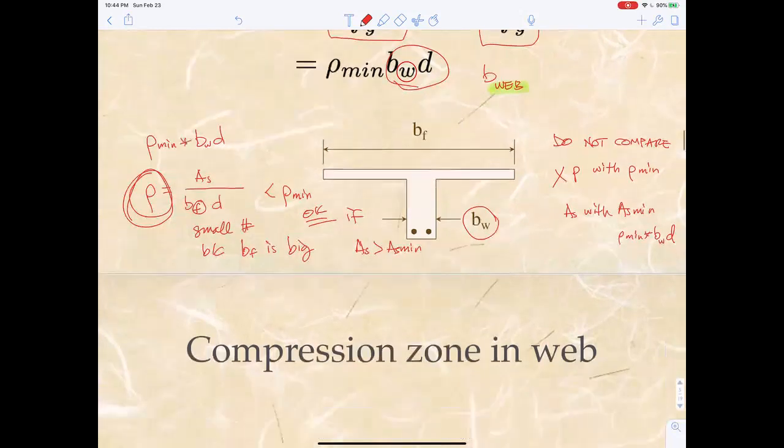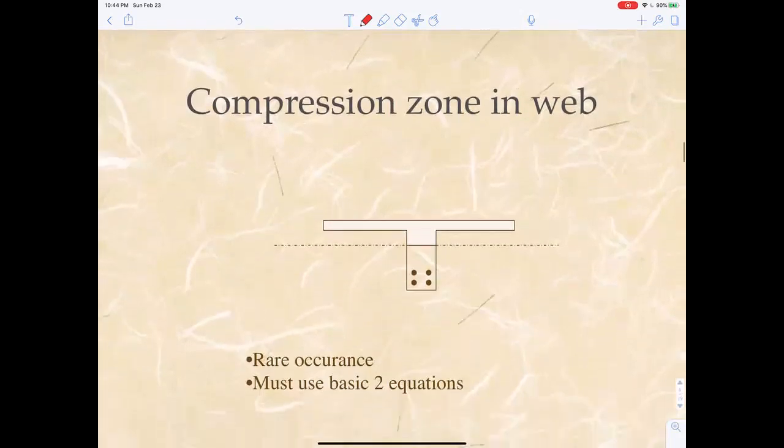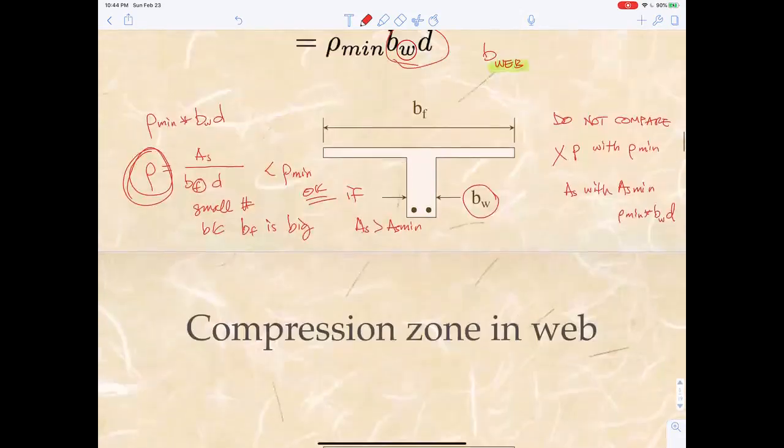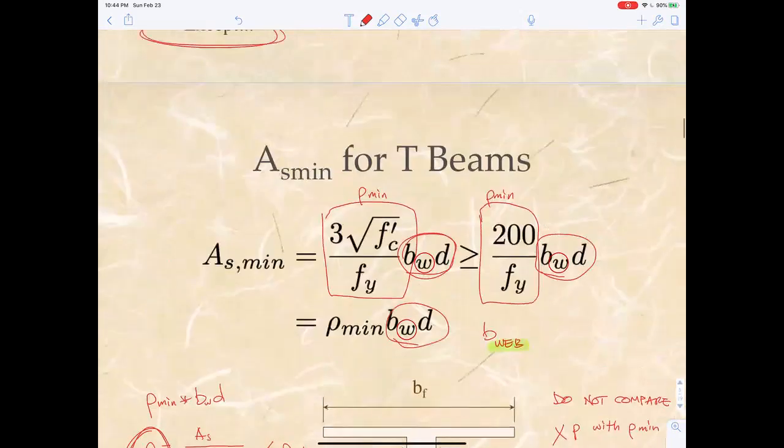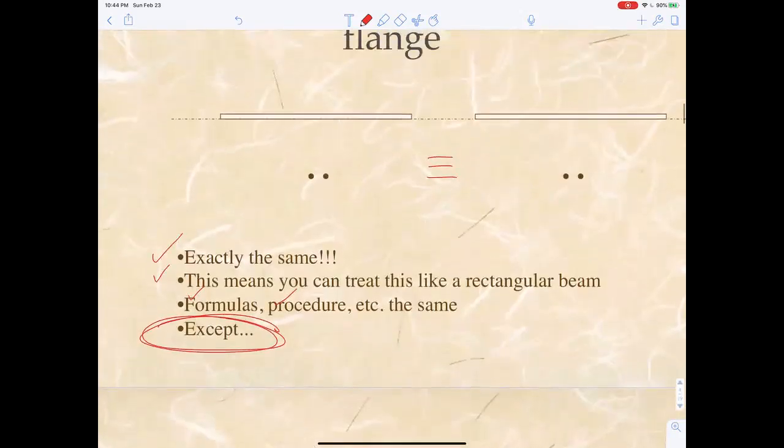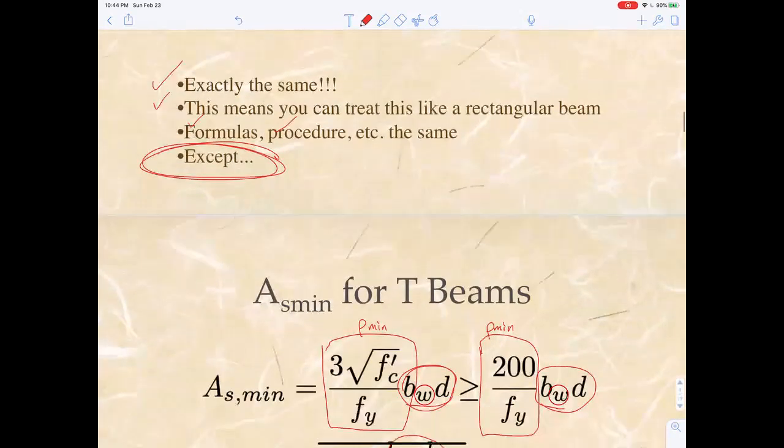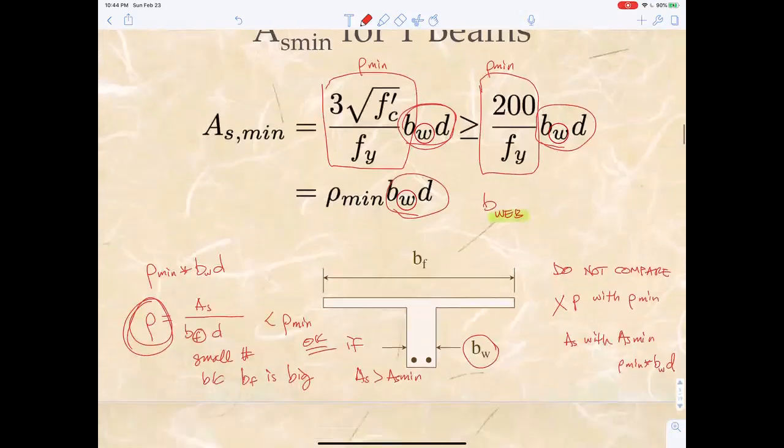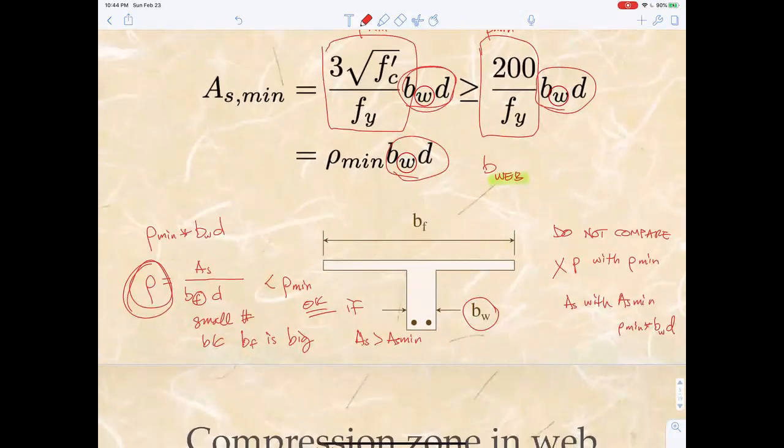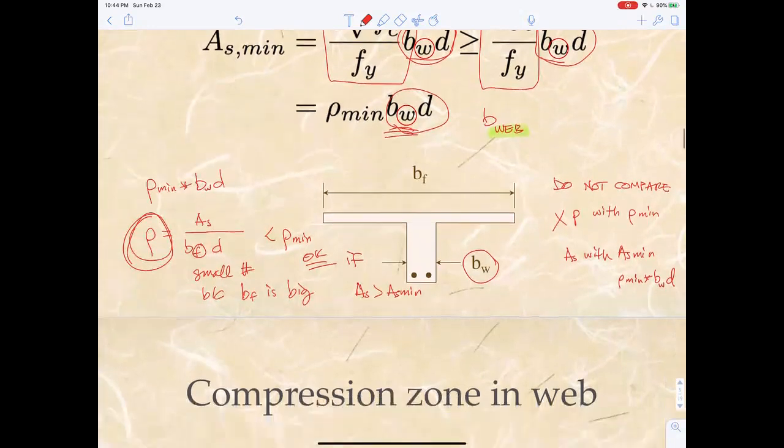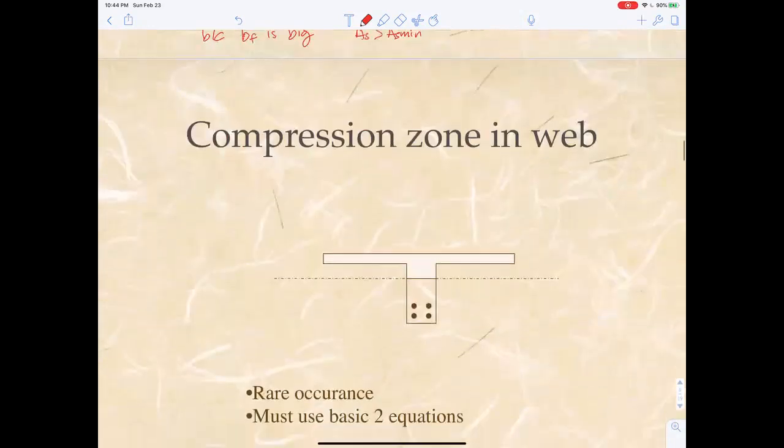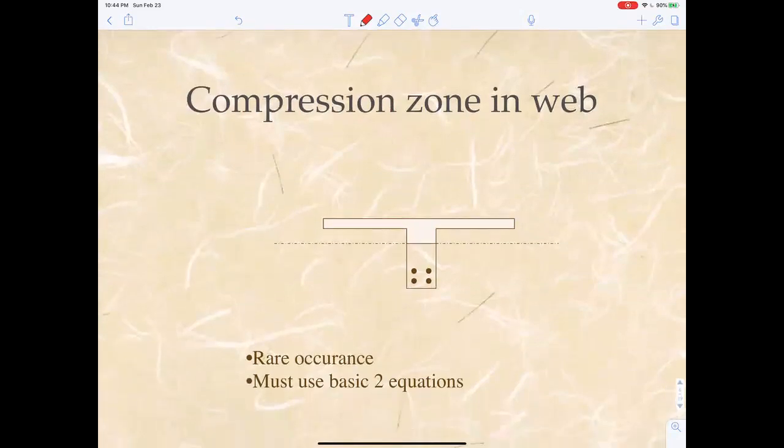Okay, so that's everything you need to know about T-beams when the compression zone is in the flange. You just do everything we did before, but instead of comparing rho to rho-min, compare AS with AS-min, and remember to use B-web when you calculate AS-min. Next, we'll talk about the extremely rare case where the compression zone goes into the web.